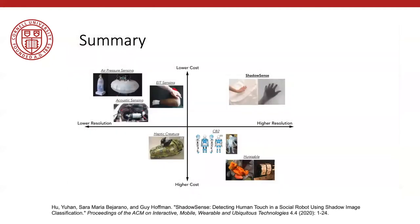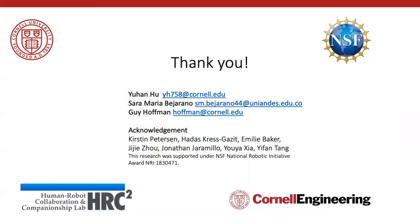To summarize, ShadowSense is a vision-based touch sensing method for social robots with many benefits compared to existing sensitive skin arrays. It can detect higher spatial resolution with minimal hardware cost, operate on different types of skins — curved, soft, or deformable — and expands the detection range to detect gestures above the skin. For more information, please refer to our paper. I would like to thank my advisor Professor Guy Hoffman, my colleagues, and the NSF for funding this research. Thank you for your attention, and I'll be happy to take any questions.